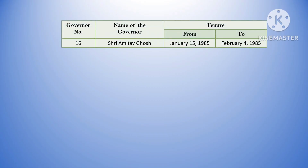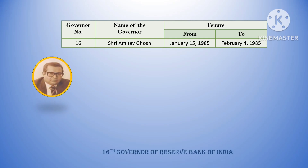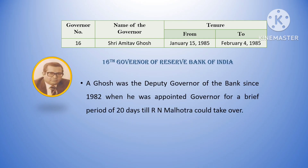The sixteenth governor was Sri Amitav Ghosh. His tenure was from January 15, 1985 till February 4, 1985. He had been deputy governor of the bank since 1982 and was appointed governor for a brief period of 20 days until R.N. Malhotra could take over. His tenure was the shortest tenure as governor of the Reserve Bank of India.